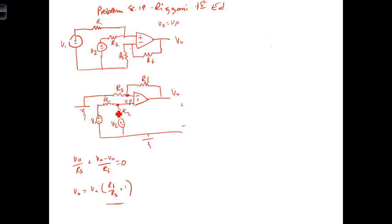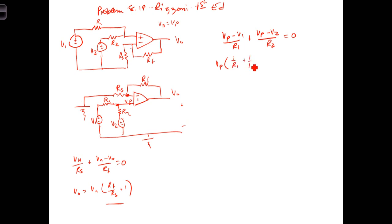Summing the currents leaving the non-inverting node: the current going toward V1 is (V sub P minus V1) divided by R1, and the current going toward V2 is (V sub P minus V2) over R2. Since the current into the terminal is zero, the sum of those two terms equals zero. Combining like terms, we get V sub P times (1 over R1 plus 1 over R2) on one side, and positive V1 over R1 plus V2 over R2 on the other.